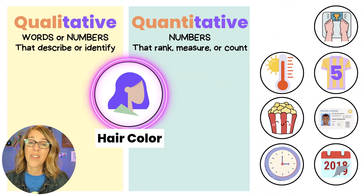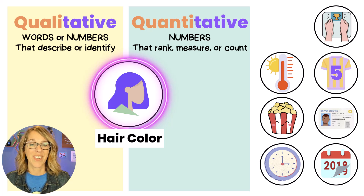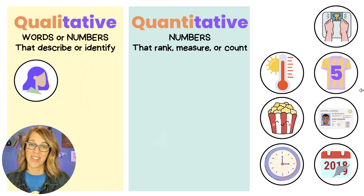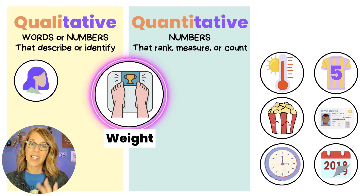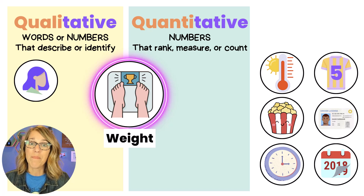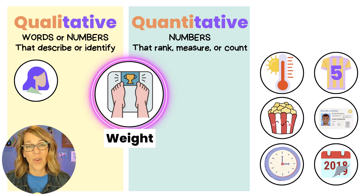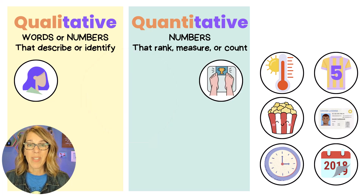Let's start with hair color. Hair color can take on values such as black, orange, red, or purple — these are descriptive words, so that falls under qualitative. Next, weight. Weights are numbers — we step on a scale and get a number, and those numbers are meaningful and sequential. A higher number means higher weight, so that's a quantitative variable.